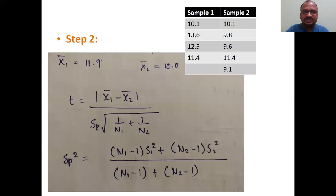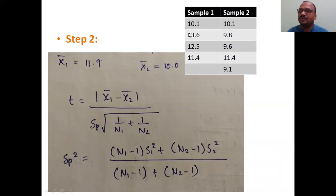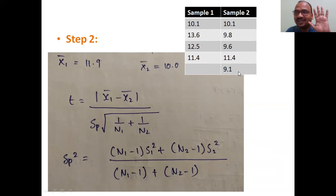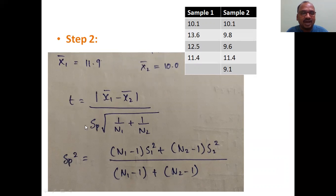Step 2: first calculate the means. For x̄₁ (first group mean), sum up the values 10.1, 13.6, 12.5, 11.4 and divide by 4, giving x̄₁ = 11.9. For x̄₂ (second group mean), sum up all 5 values and divide by 5 to get x̄₂.